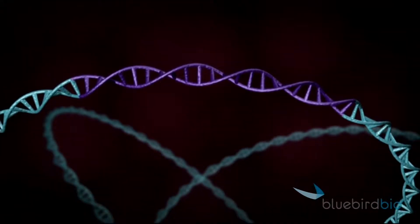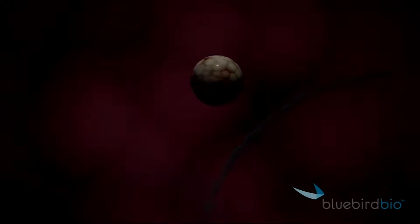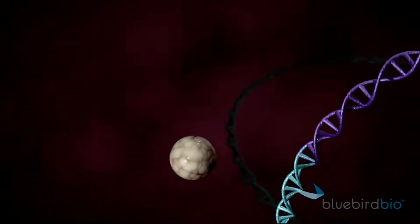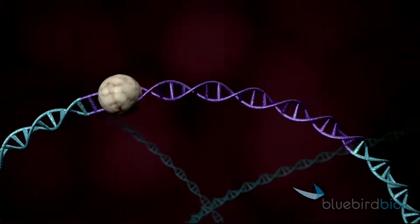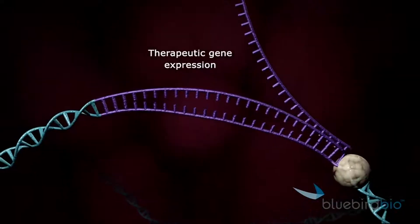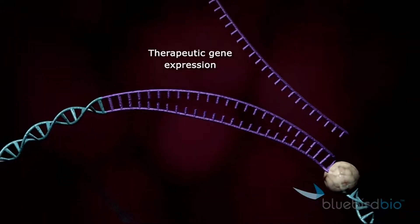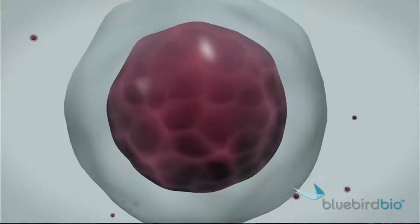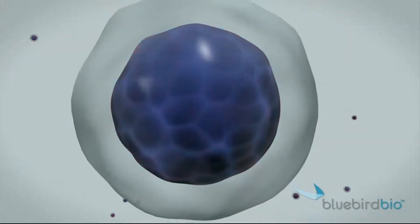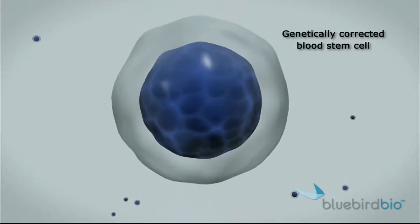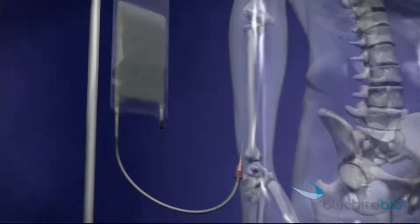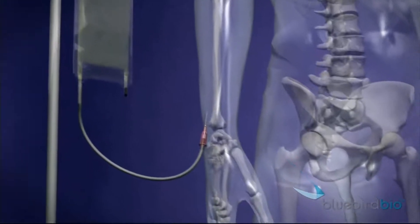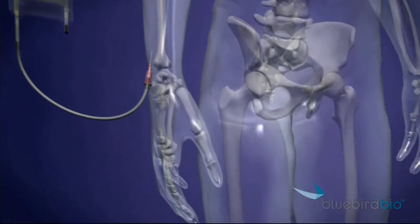What you've just created is a gene-modified blood stem cell. That stem cell knows what to do. It starts producing your therapeutic gene — a lot of them. You've turned your red cell into a blue cell in this picture. Those cells are now modified; they know how to do what the problem was before.